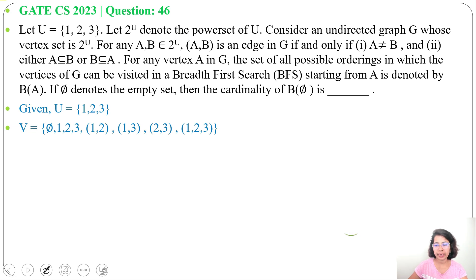There will be 8 vertices: φ, 1, 2, 3, {1,2}, {1,3}, {2,3}, and {1,2,3}. There is a condition that A should not equal B and A should be a subset of B or B should be a subset of A, then only there will be an edge.